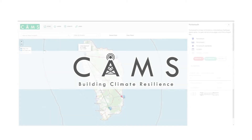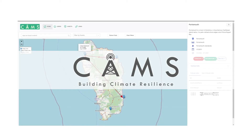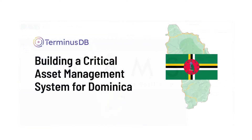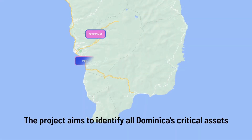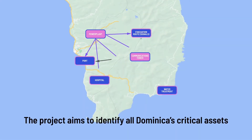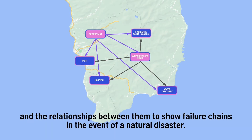In this video I'll show you the progress we've made in building a critical asset management system for Dominica. The application is designed to enable cities, islands and communities to capture information about their critical assets and the dependencies assets have with one another, so that officials can plan for and respond to extreme weather events to become climate resilient.